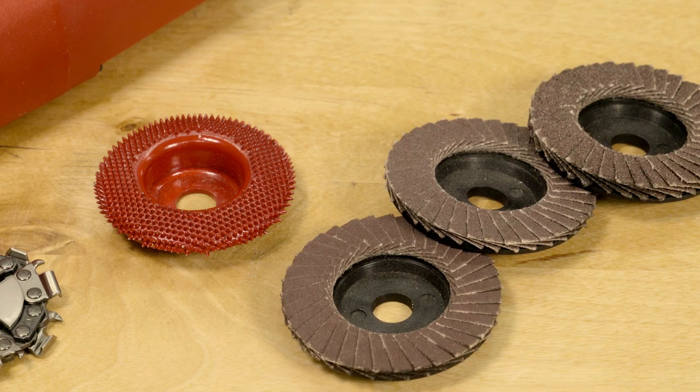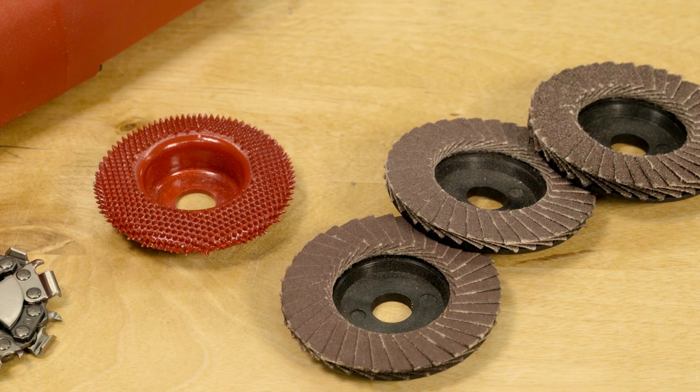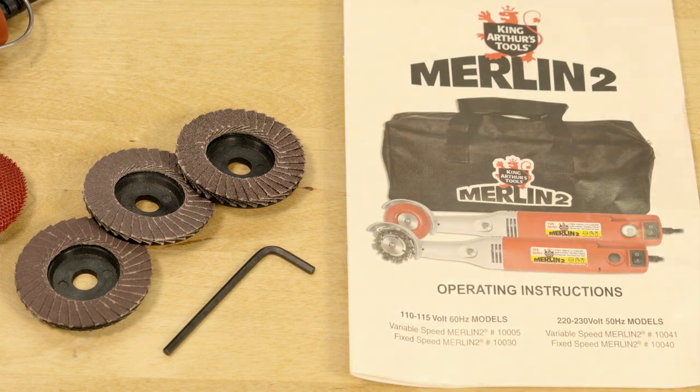Also included are 60, 120, and 240 grit flap sanders, Allen key, and instructions.